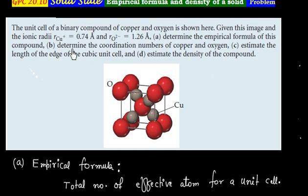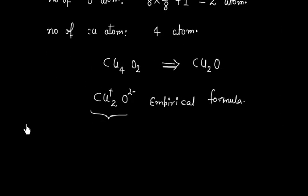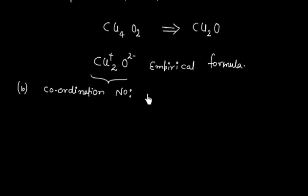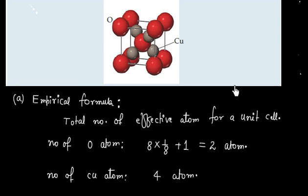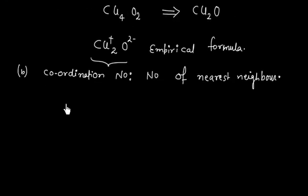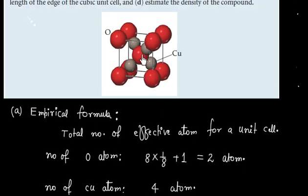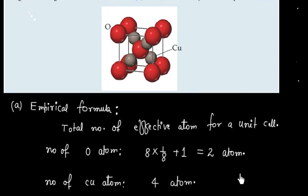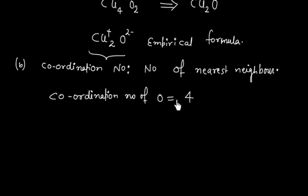Now we have to calculate the coordination number for copper and oxygen. The coordination number is the number of nearest neighbors. Let us calculate the number of nearest neighbors first for oxygen. This oxygen atom is touching 4 copper atoms — this is a nearest neighbor, this is a nearest neighbor, this one, and this one. So the coordination number of oxygen is 4.